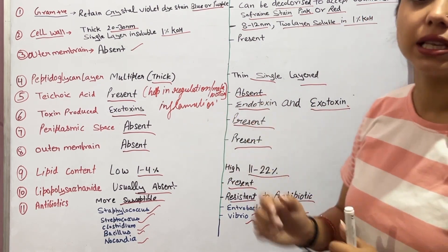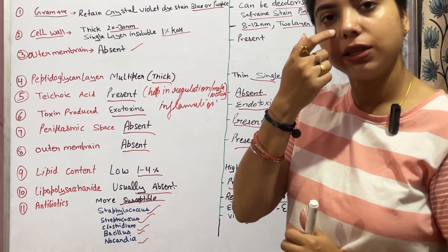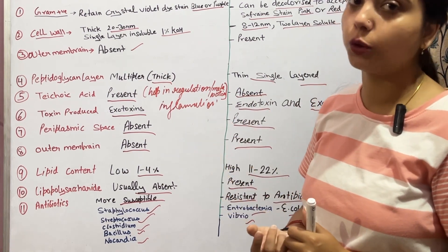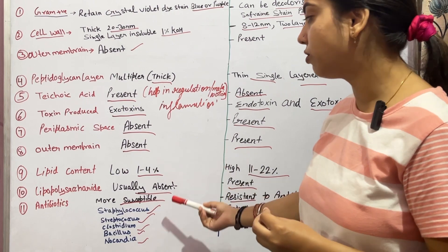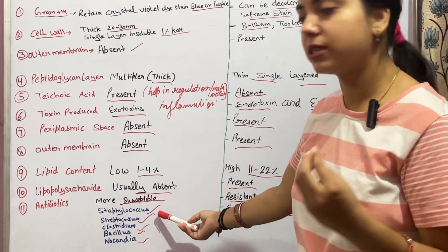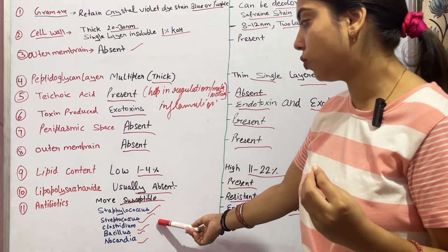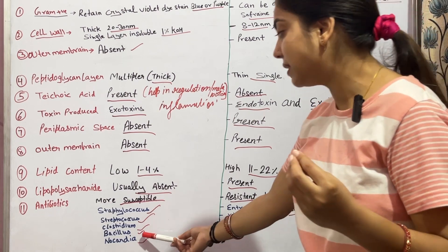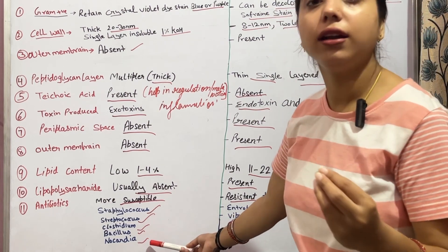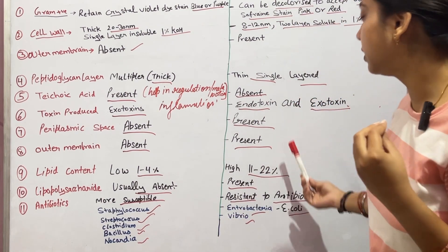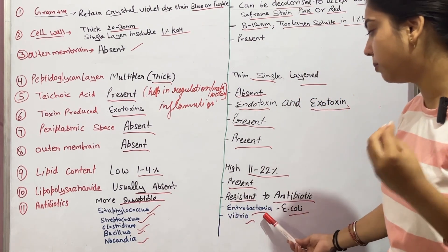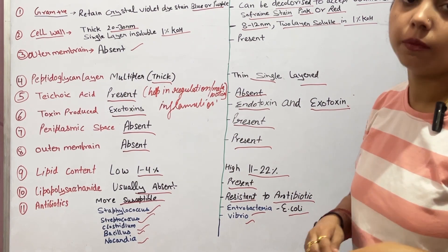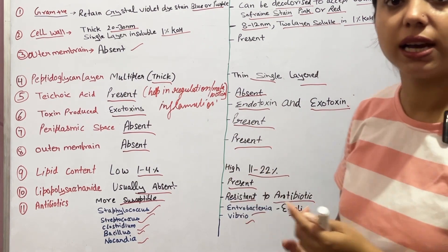Now let's talk about examples, which are very important to know. Gram positive bacteria include Staphylococcus, Streptococcus, Clostridium, Bacilli, and Nocardia. Gram negative bacteria include Enterobacteria, E. coli, and Vibrio.